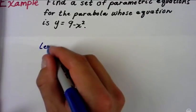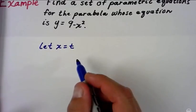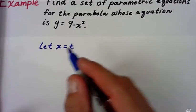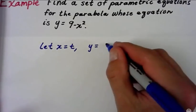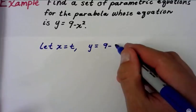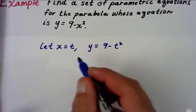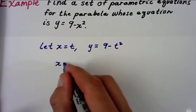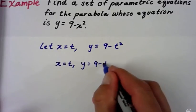Well that means if x equals t, then y would equal 9 minus t squared. And there is one of the parametric equations. So you could have x equals t, y equals 9 minus t squared. Then you're done.